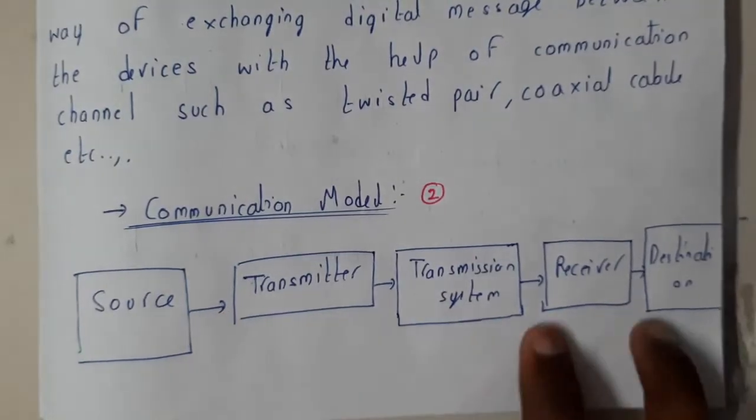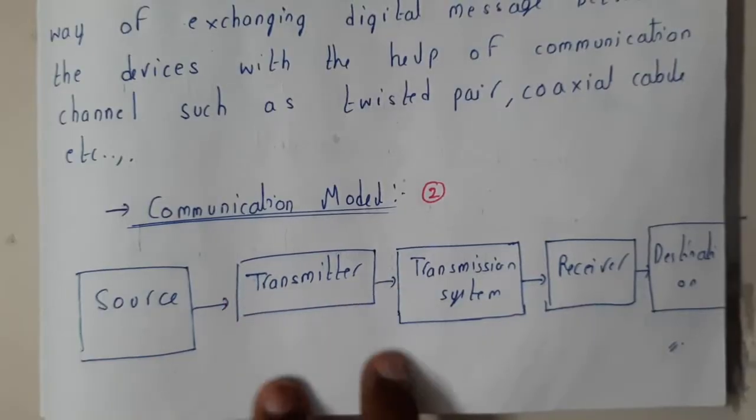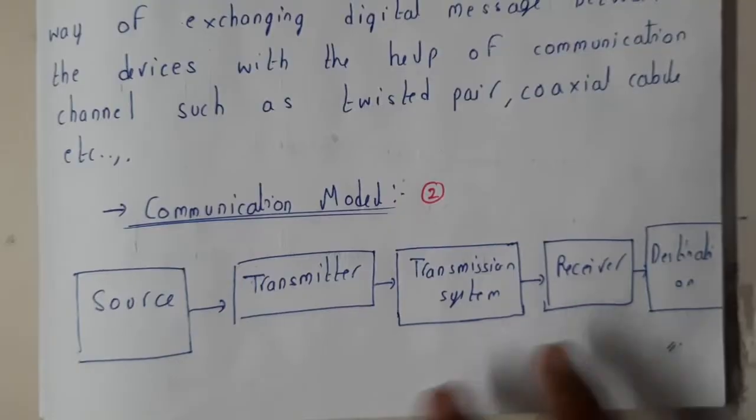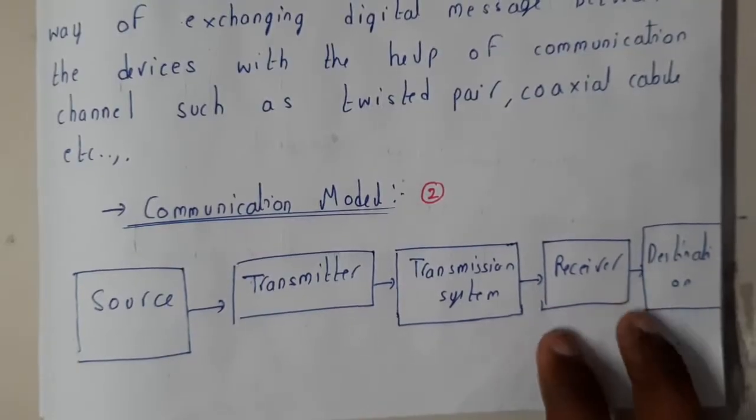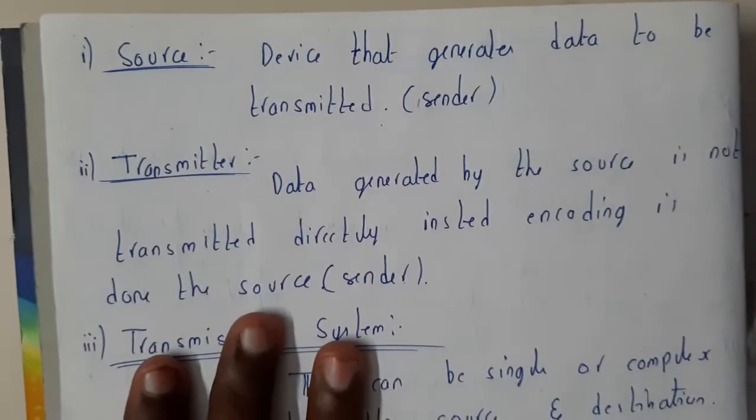We will have a transmitter and a receiver. The source will give the data to the transmitter. The transmitter transmits into the system, approaches the receiver, and the receiver will send it to the destination.